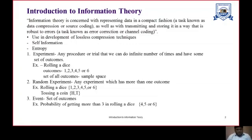The two more important terms in the field of Information Theory are self-information and entropy. But before getting into these terms, let's understand a few terms. The first is experiment — any procedure or trial that we can do a finite number of times and have some set of outcomes is called an experiment.